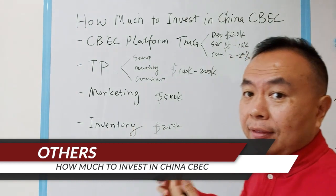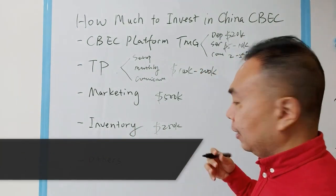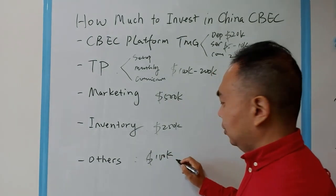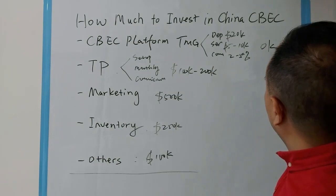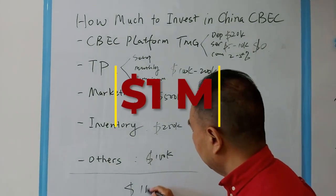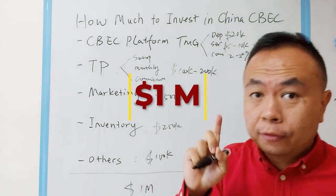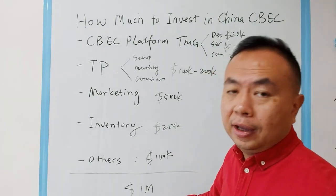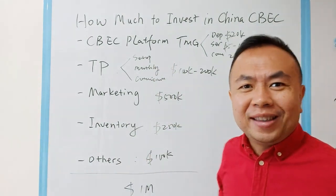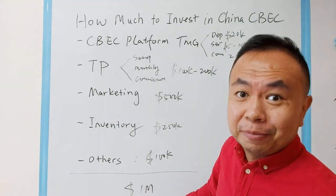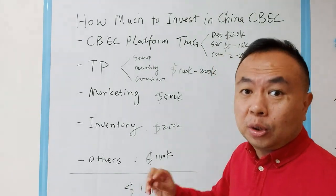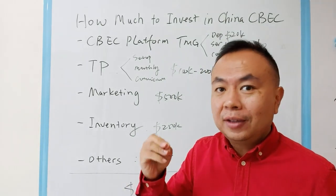For other costs — travel fees, application fees, logistics, and warehouse rent — let's say that's another $100,000 USD. Adding it all up: platform costs near zero, plus TP fees, plus marketing, plus inventory, plus other costs, that comes to approximately $1 million USD for your first year. I'm not saying this is the minimum — you can open the door and do nothing, and it costs almost nothing, but what's the point? Your opportunity cost is much higher. So please invest in China for the first year; the minimum value is $1 million USD so that you can have a good chance in this market.